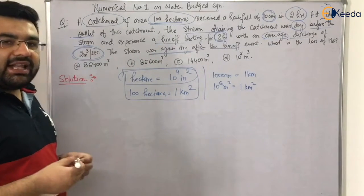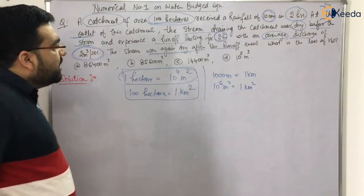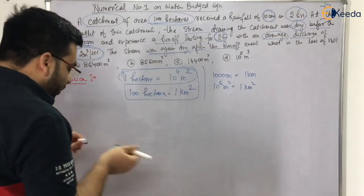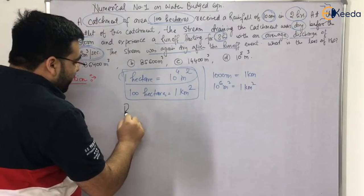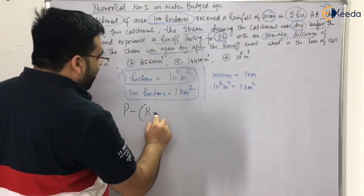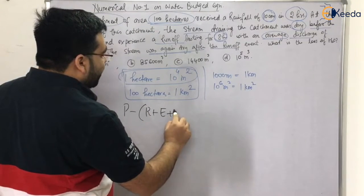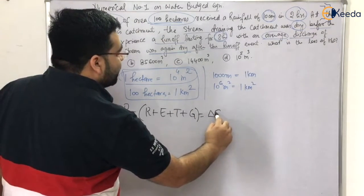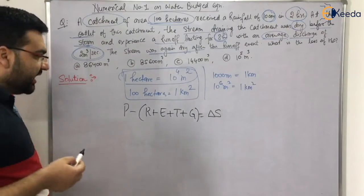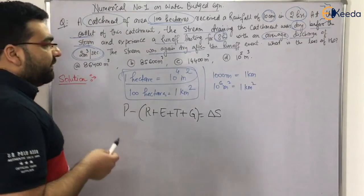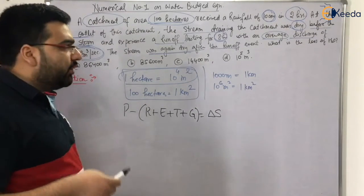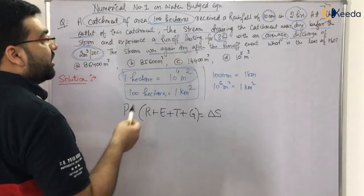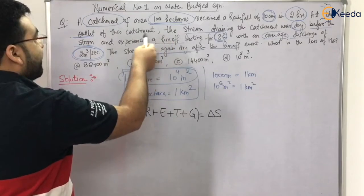We apply the water budget equation: precipitation minus runoff plus evaporation plus transpiration plus groundwater gives you storage change. In other words, inflow minus outflow equals delta storage. Let us apply this equation here.